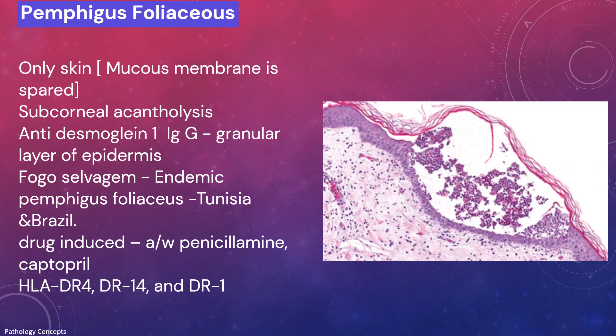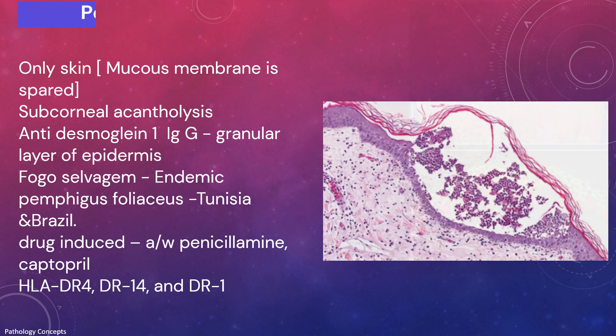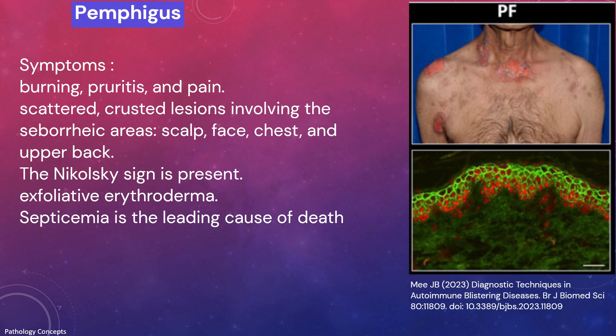Pemphigus foliaceus involves only skin — the mucous membrane is spared. There is sub-corneal acantholysis, and autoantibodies are anti-desmoglein 1 immunoglobulin antibodies. There is an endemic form common in Tunisia and Brazil called fogo selvagem. Sometimes pemphigus foliaceus is drug-induced, associated with penicillamine and captopril. Associated HLAs are HLA-DR4, DR14, and DR1.